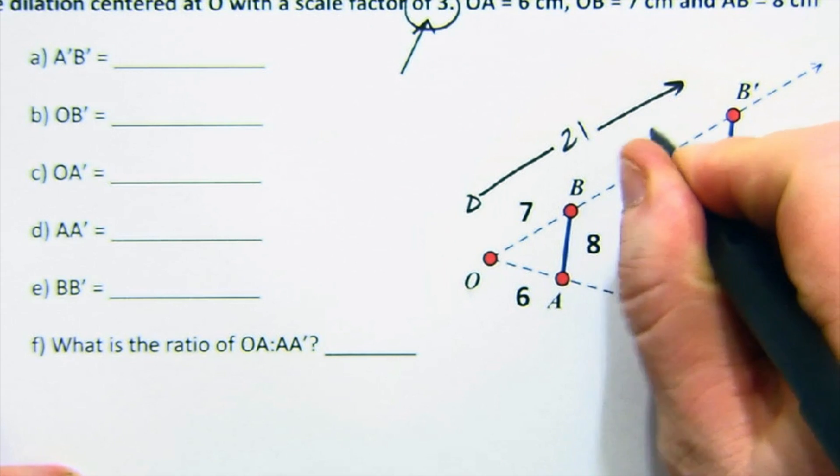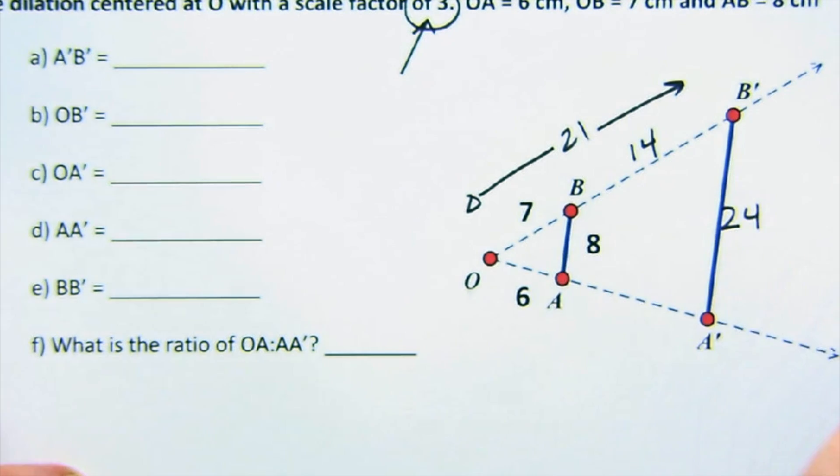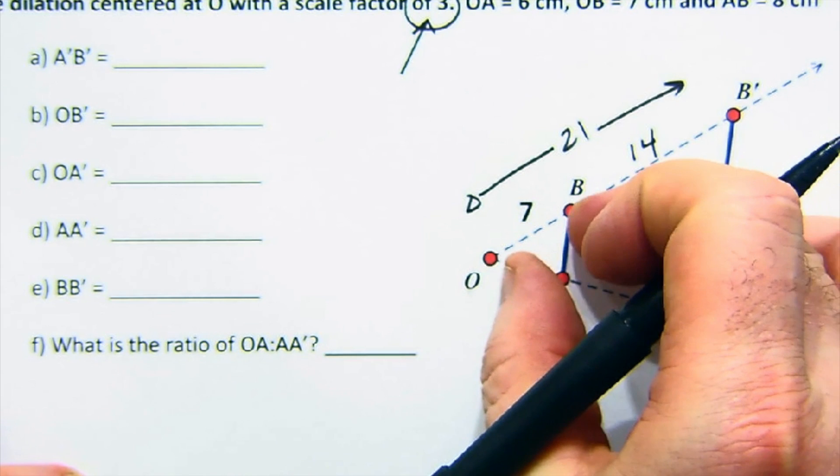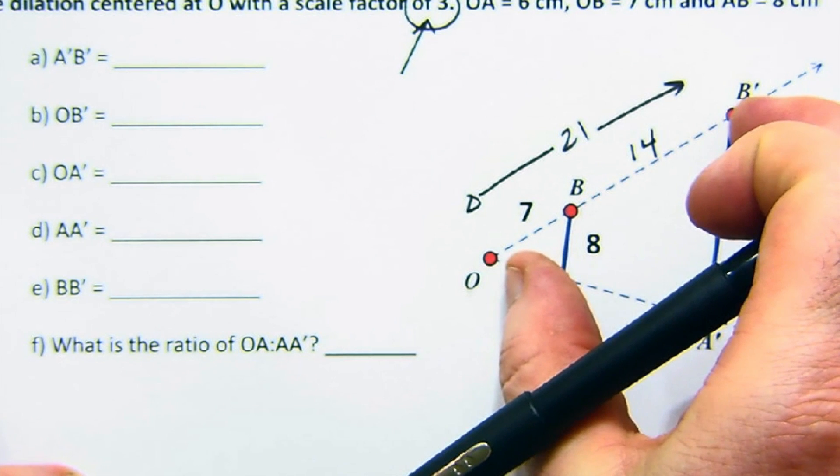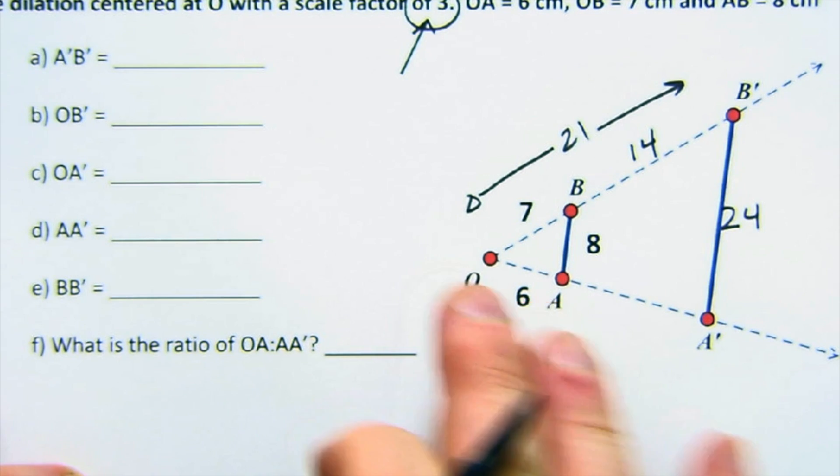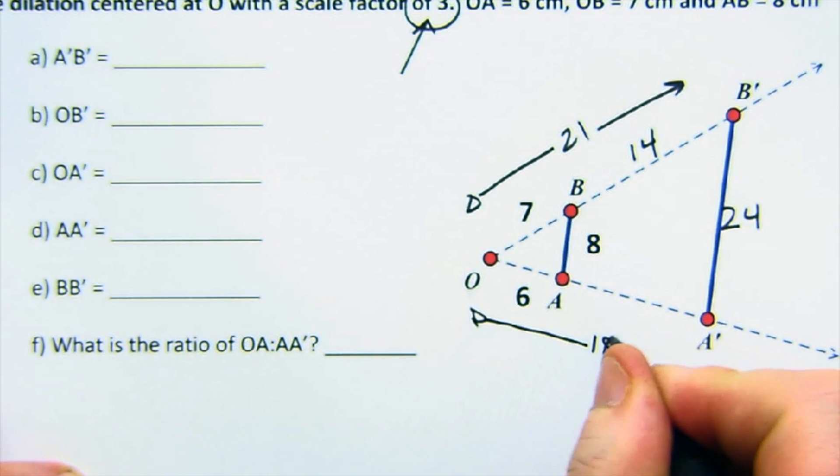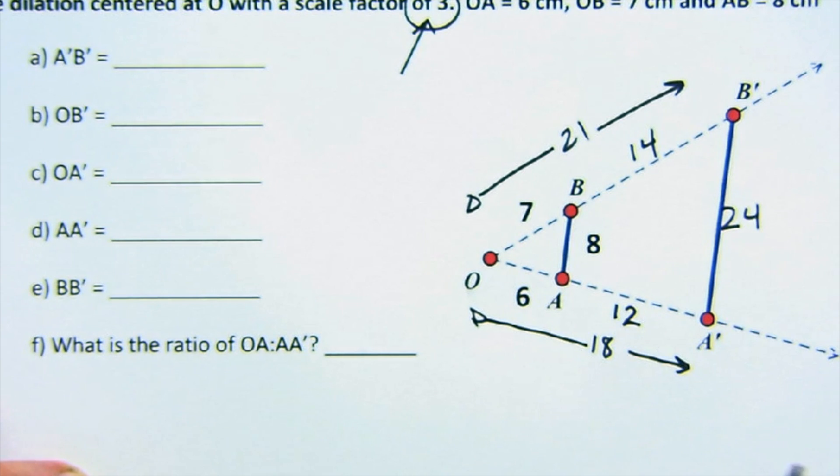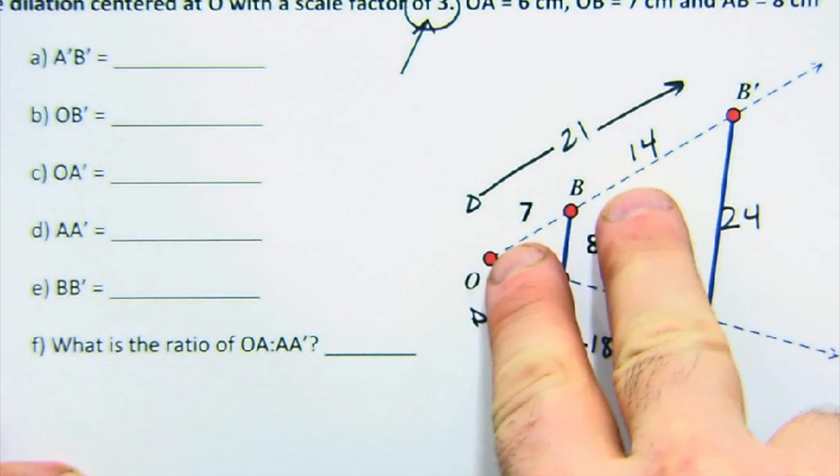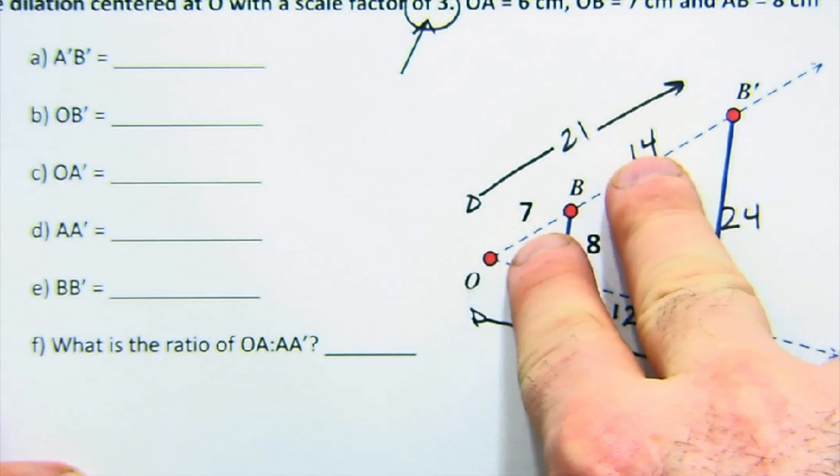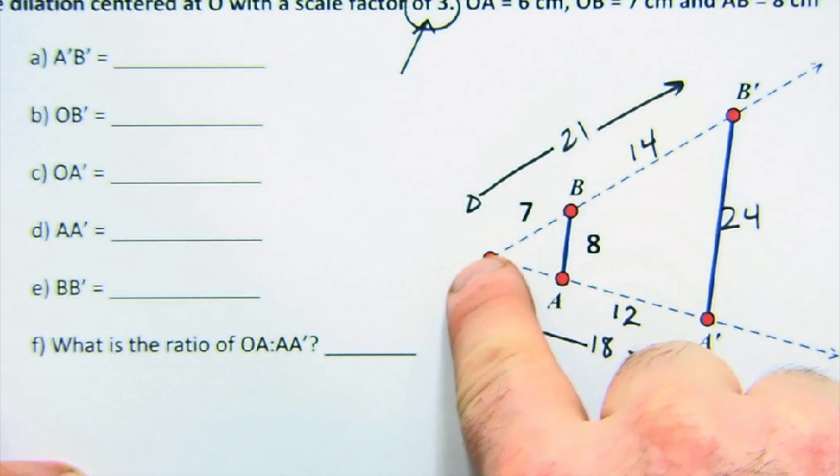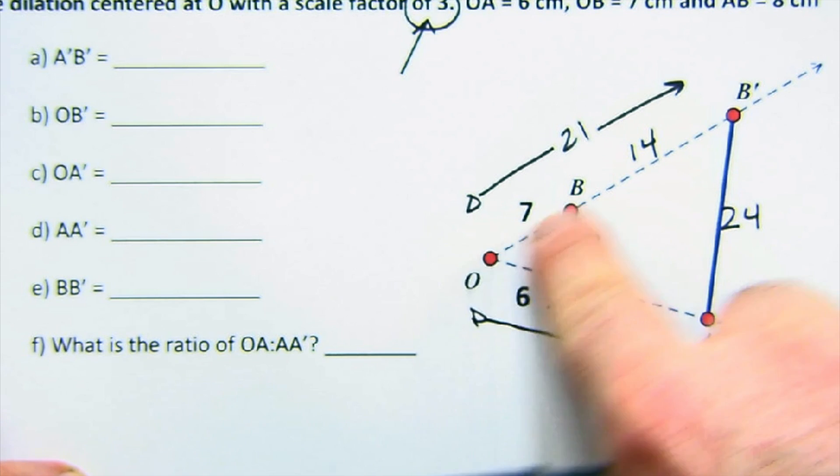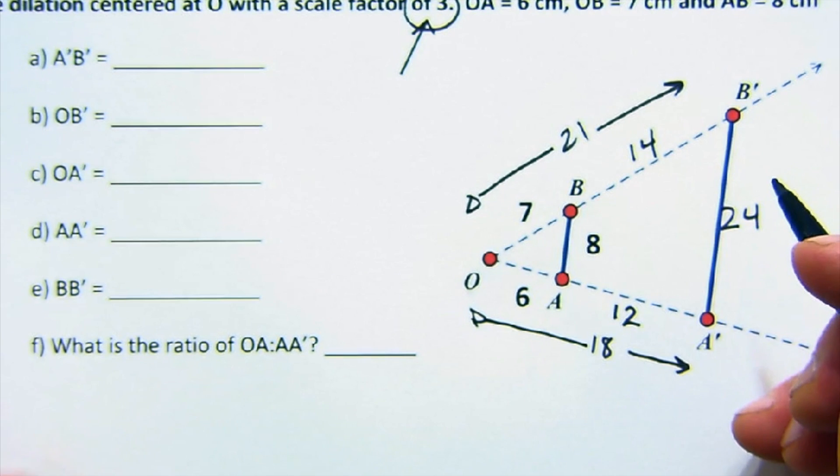Now, 21 would be the entire length here, leaving 14 here. A lot of students, again, get this idea confused. But if you have seven and you multiply it by three, you're at 21 away. Here, six times three, you're 18. That would be this total value. But, of course, 12 would be here. So, again, in terms of the pieces, it's a one-to-two ratio. But in terms of the full dilation, it's a one-to-three ratio. That's always a confusing piece for people.